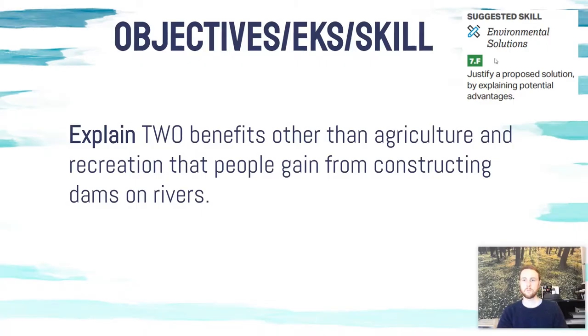Our practice FRQ for topic 6.9 is to explain two benefits — other than agriculture and recreation — that people gain from constructing dams on rivers.